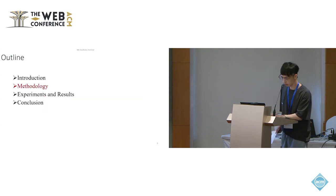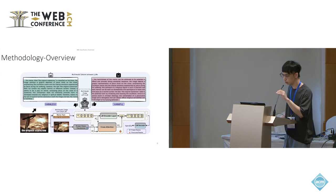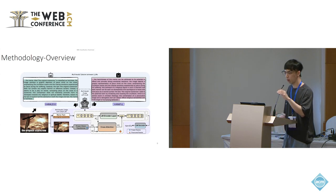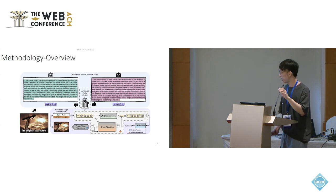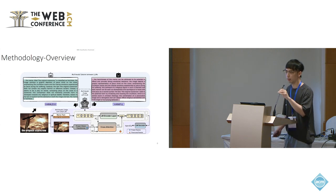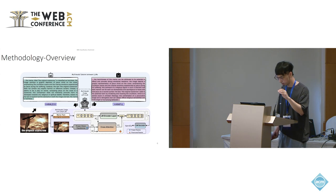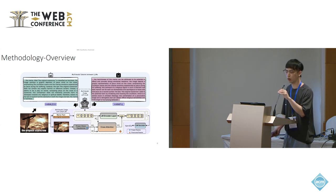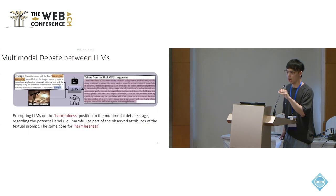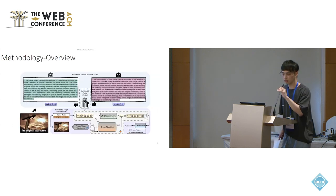Turning to our proposed methodology: given a meme, the task aims to detect it as harmful or not. We propose an explainable approach to detect harmful memes achieved through reasoning over conflicting rationales on both harmlessness and harmfulness positions. Inspired by the powerful capabilities of large language models on text generation and reasoning, we first elicit multimodal debates between large language models to generate rationales from contradictory arguments. We then propose to fine-tune a smaller language model as the debate judge for harmfulness inference, facilitating multimodal fusion between harmfulness rationals and the multimodal information present in memes.